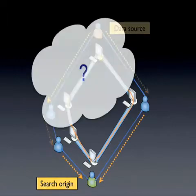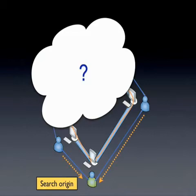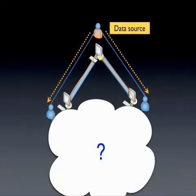From the perspective of the receiver, the original data source could be anywhere in the network. All that the receiver knows is that data is being forwarded by directly connected friends. Similarly, the sender doesn't know which user is requesting data, only that a request was forwarded by friends. The ultimate destination could be anywhere in the mesh.